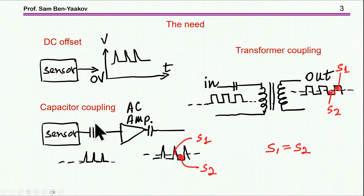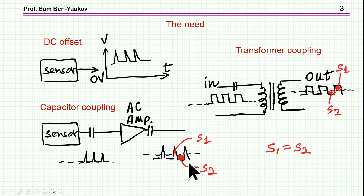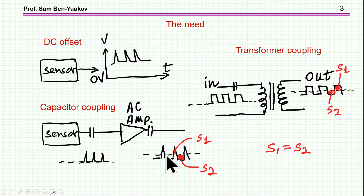Another situation is that you have a sensor producing signals of low magnitude that you want to amplify. The best way would be to amplify them through an AC amplifier, which is free of DC offset. After this AC amplifier, the signal is shifted, because when passing through the capacitor you get an AC signal — meaning the area of the positive side equals the area of the negative portion — and therefore there is a shift from the original value, so there is a need for DC restoring.